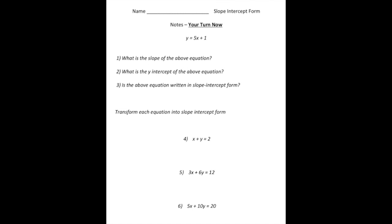Hey everybody, welcome back. Let's see how you did with these problems. For this first problem, we have the equation y equals 5x plus 3. Notice this is already written in slope-intercept form, which is nice. So we can immediately figure out the slope and the y-intercept. What is the slope? The m value is the slope, so in this case it's going to be 5. What is the y-intercept? That's the b value, so in this case it's going to be 1. And is the equation written in slope-intercept form? The answer is yes.